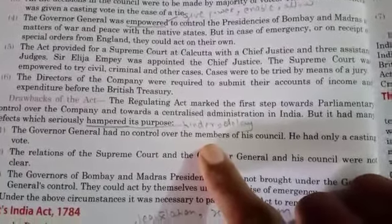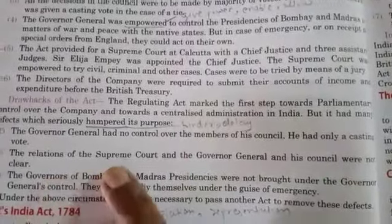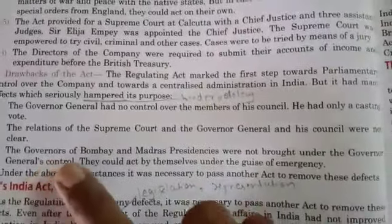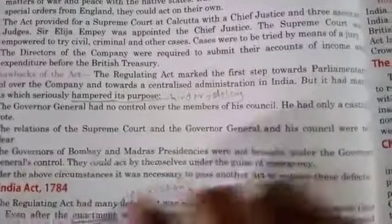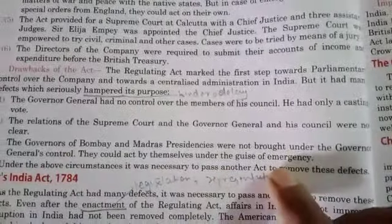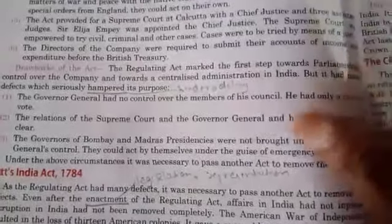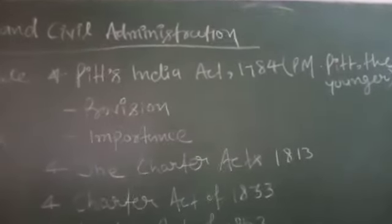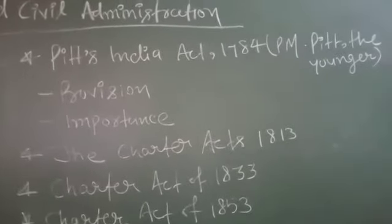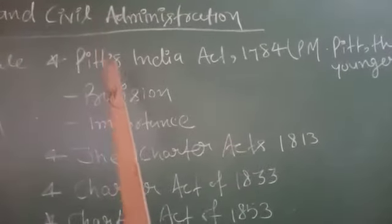The Regulating Act was a very important act — for the first time, parliamentary basis was introduced to control the Company. But its shortcomings were: first, Parliament had no direct control in India, they only had voting rights; second, the relationship between the Supreme Court, the Governor General, and the Council was not clear; third, the governors of Bombay and Madras Presidencies were not under the Governor General's control and would take any action in the name of emergency. Seeing these drawbacks, England passed the next act — Pitt's India Act.